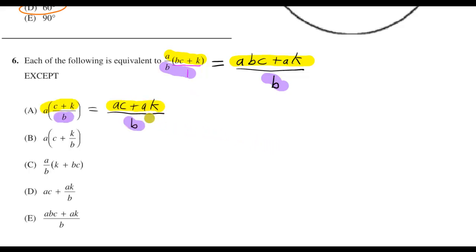We could do the same thing for option A and we get ac plus ak over b. We can already see that these two things are not exactly the same. In one of them you got ac and the other one you got abc, so we already found our right answer.